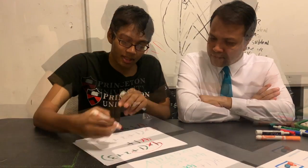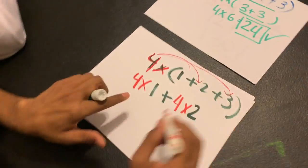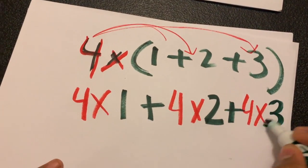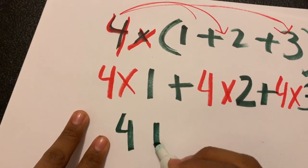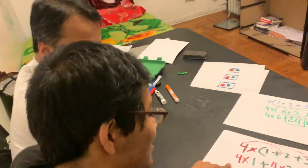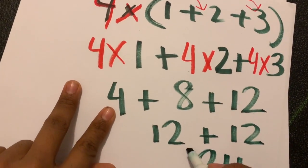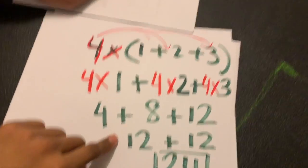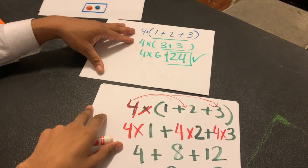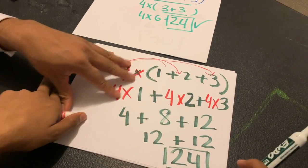Now using distributive property: distribute four to each term. Four times one is four, plus four times two is eight, plus four times three is twelve. Four plus eight is twelve, plus twelve is 24. Same answer! This PEMDAS approach solves the group first without distributing, and the distributive property distributes the four to each term. Do you see the difference? Yeah!